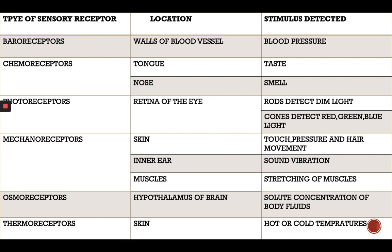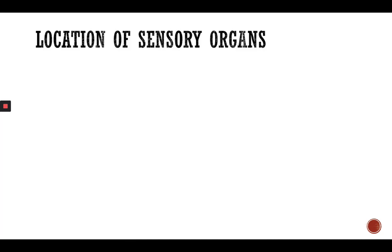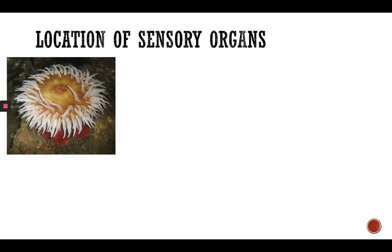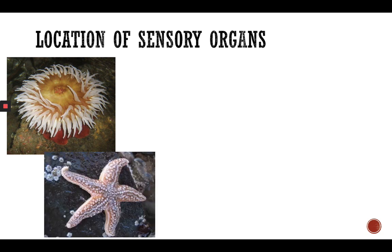Remember those types of sensory receptors because they are important locations of sensory organs. Not all living organisms have all sensory organs concentrated in their head. Some organisms, such as sea anemones and starfish, have sensory receptors all around their body.